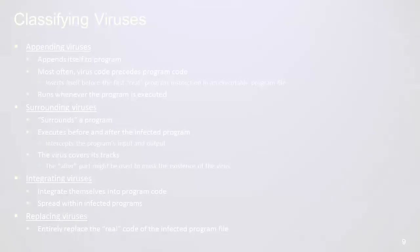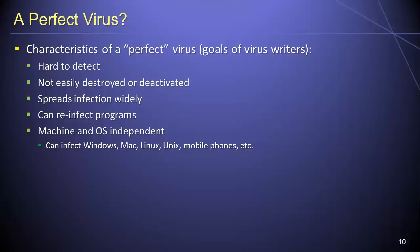From the perspective of someone wishing to design a virus, there are several highly desirable virus characteristics that the designer can seek to incorporate. An ideal virus should be difficult to detect, not easy to destroy or deactivate, and should propagate itself widely and rapidly. Further, an ideal virus should be able to reinfect programs that have previously been infected, and should be machine and operating system independent.